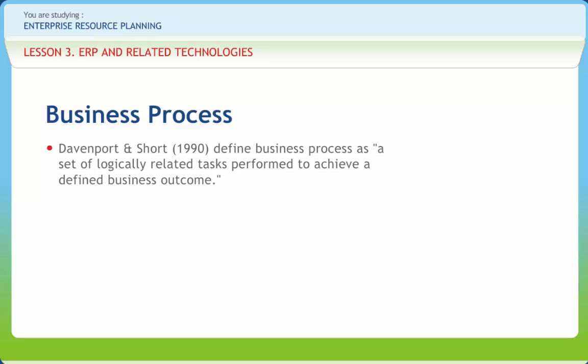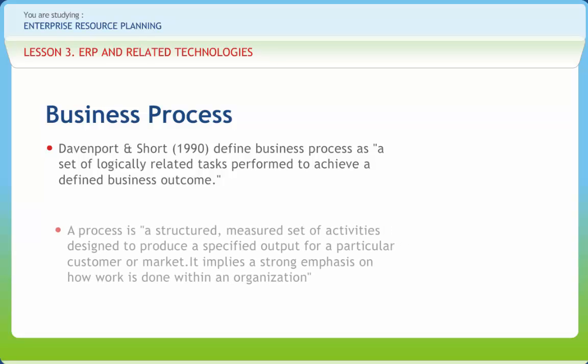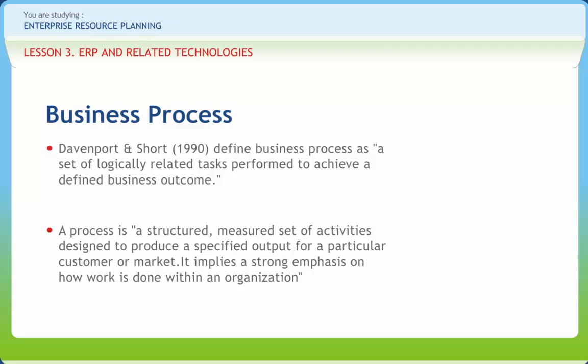Davenport and Short (1990) defined a business process as a set of logically related tasks performed to achieve a defined business outcome. A process is a structured, measured set of activities designed to produce a specified output for a particular customer or market. It implies a strong emphasis on how work is done within an organization. Processes are generally identified in terms of beginning and end points, interfaces, and organization units involved, particularly the customer unit. High-impact processes should have process owners.